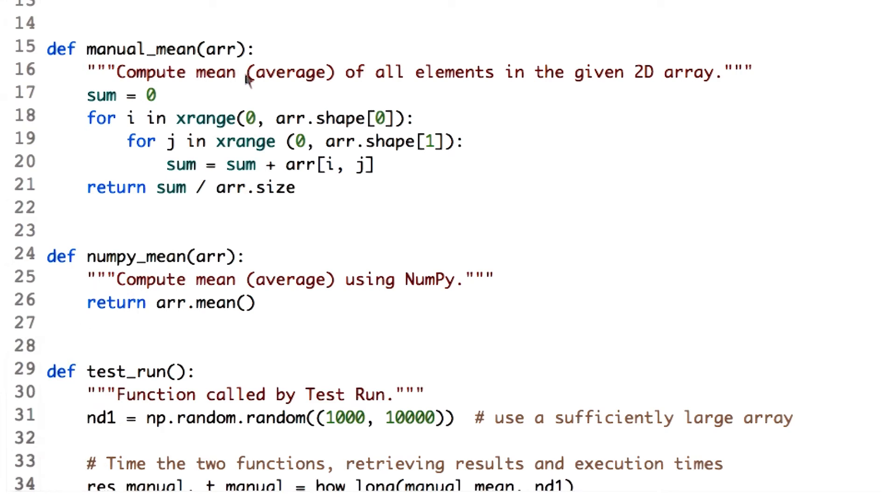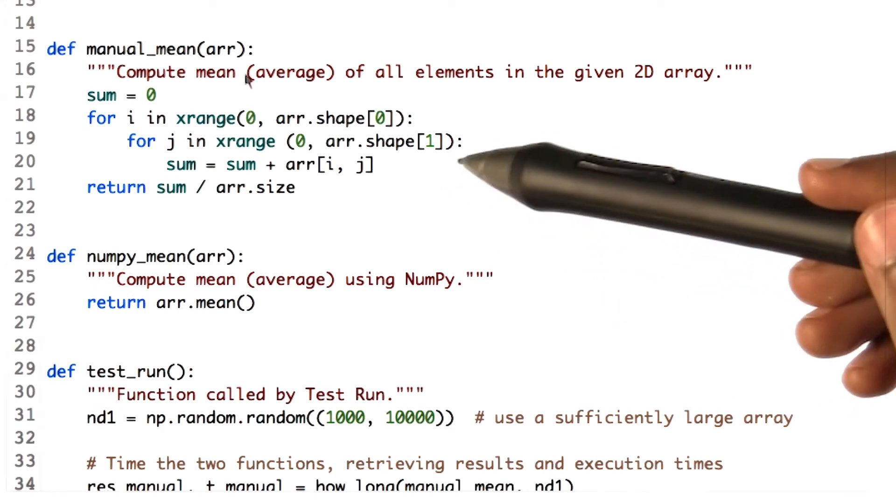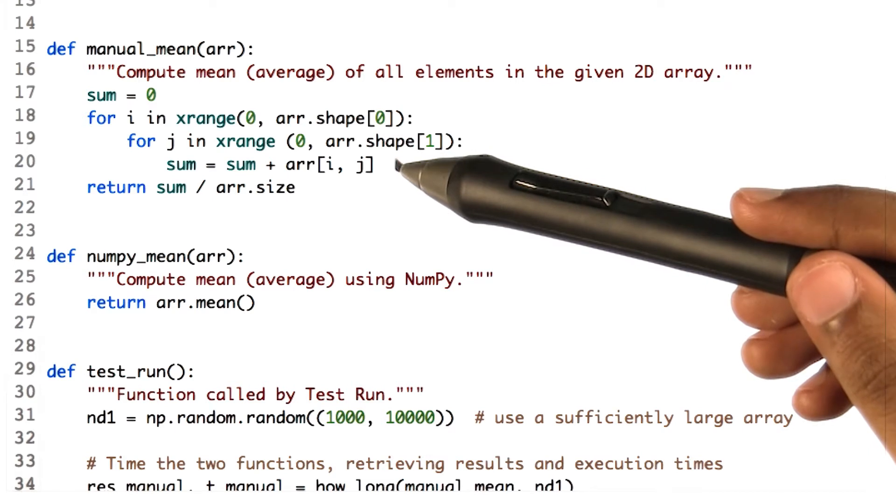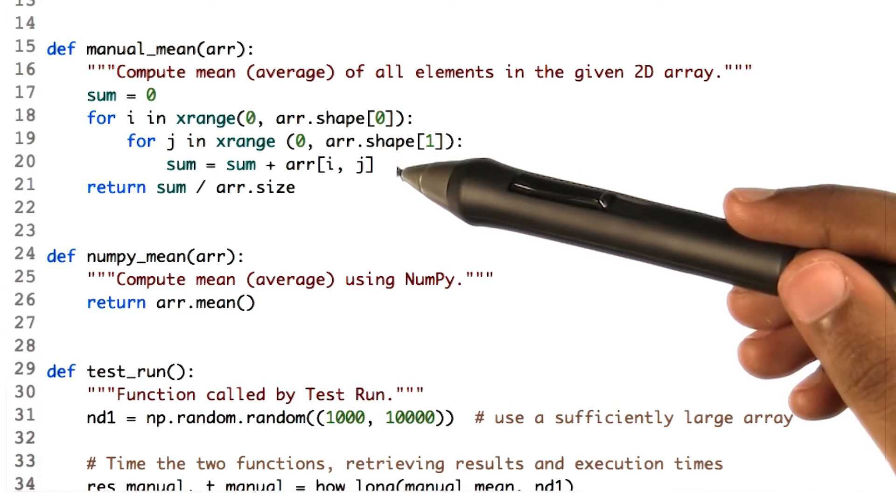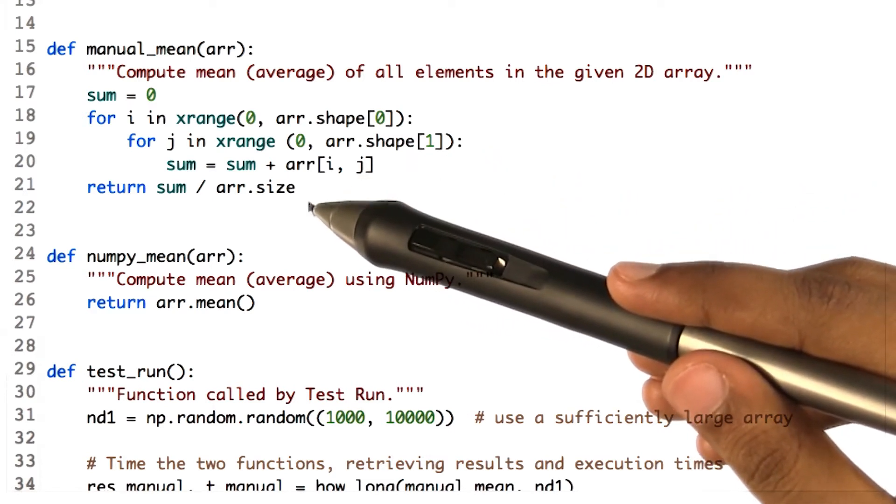We iterate over each row, and for each row iterate over each column. We then sum all the values throughout the array. Finally, we divide by the size of the array, and hence we get the mean.